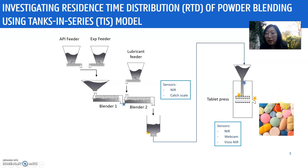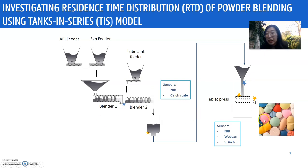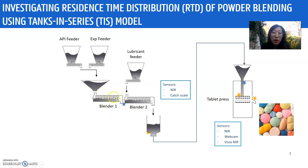One of the challenges of this continuous line is about material traceability. For example, if we find some tablets have problems at the end, we want to trace them back to the original source. To do this, we need to know the residence time distribution of each unit operation.